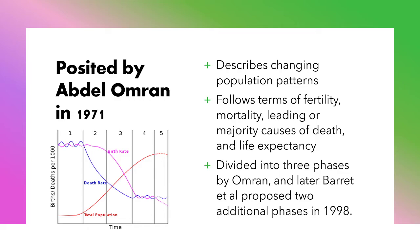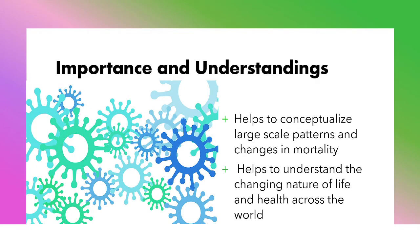It was divided into three phases by Omran, and later Barrett et al. proposed two additional phases in 1998. It's important that we understand this because it helps conceptualize large-scale patterns in population and changes in mortality, as well as the changing nature of life and health across the world as we deal with pandemics and other endemic situations.